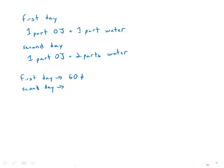On both days, all the orange aid made was sold. If the revenue for selling the orange aid was the same for both days, and if the orange aid was sold at 60 cents per glass on the first day, what was the price per glass on the second day?